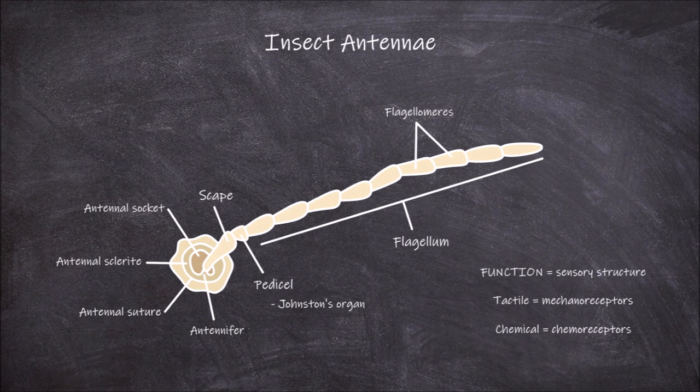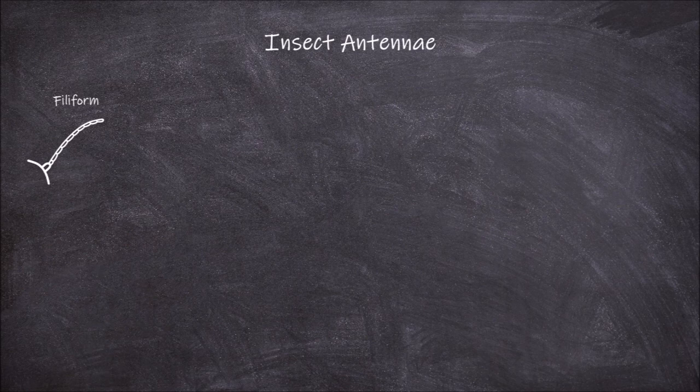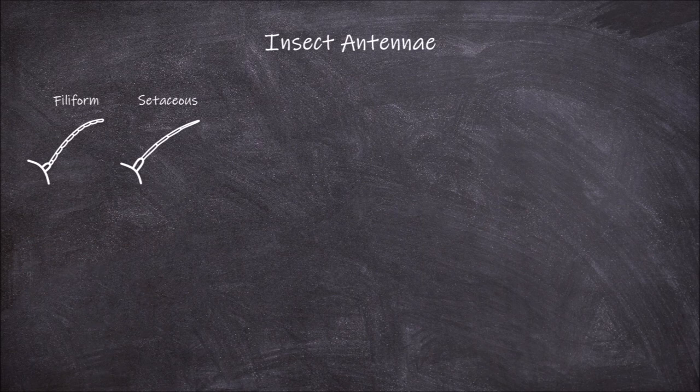There is a lot of diversity in the structure of antennae, but all are based on this three-part structure. Filiform antennae are slender and the flagellum segments keep a uniform width along the length. In setaceous antennae, the antennae as a whole is bristle-like and tapers from the base as you go along the length.